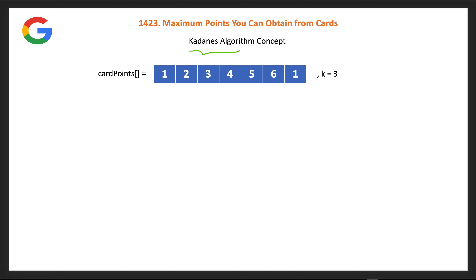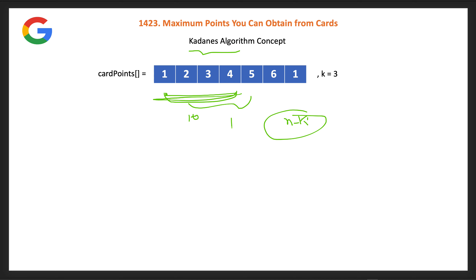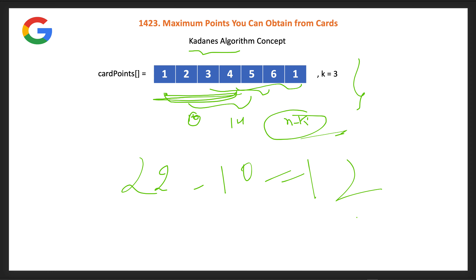The alternative uses a Kadane's algorithm idea. Instead of maximizing the k selected cards, we try to find the minimum subarray sum with length n minus k (the cards NOT selected). Create a sliding window of size n-k, find its minimum sum across all positions — for example first window sum is 10, next is 14, so minimum is 10. Then: total array sum minus minimum subarray sum gives the answer. Here: 10+12=22, 22-10=12, which is our answer. This is another valid approach.